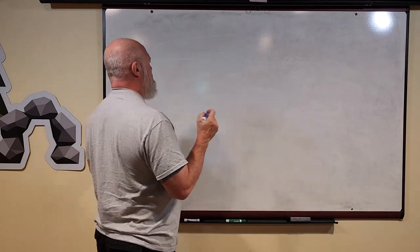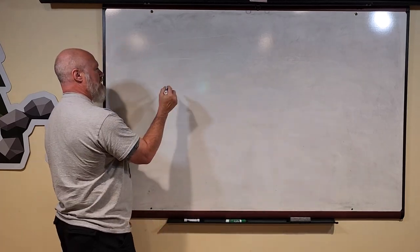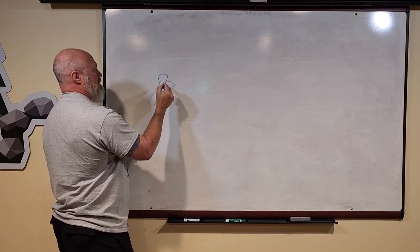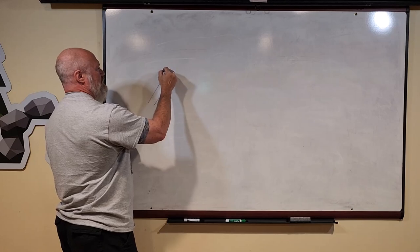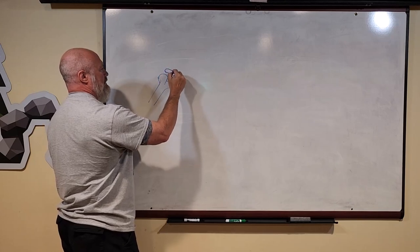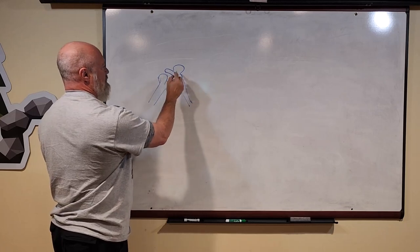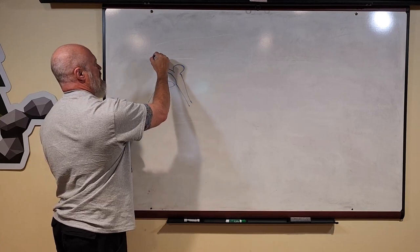Where two bones come together it's called an articulation. So here's a bone, and this is just a made-up bone, and here's another bone that's got kind of a cup and a trochanter. Where those two bones come together, we call that an articulation.